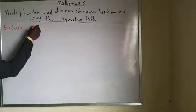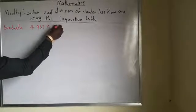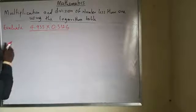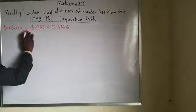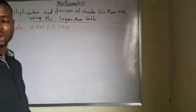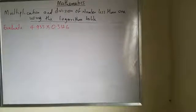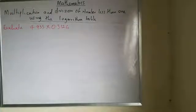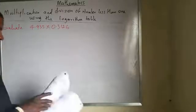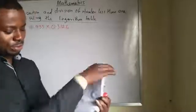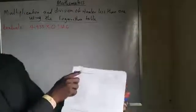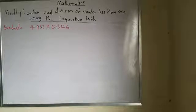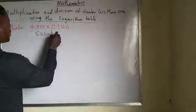For instance, evaluate 4.935 multiplied by 0.3126. In my previous video I explained the four-figure logarithm table. You should have it by now — you can also use a scientific calculator, but it's very good to have the four-figure table, which is usually found at the back of your textbook. It contains antilog and log sections.